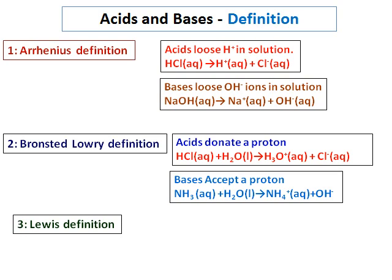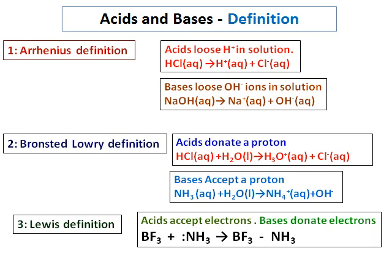The third definition is the Lewis definition, where we define acids and bases in terms of electrons. An acid is a substance which accepts electrons, and a base is a substance which donates electrons. For example, in BF₃ the boron has not completed its octet and needs two more electrons. Ammonia has an extra lone pair, so when both come together, the lone pair of ammonia is donated to BF₃. Therefore, ammonia acts as a base and BF₃ acts as an acid — Lewis acid and Lewis base.